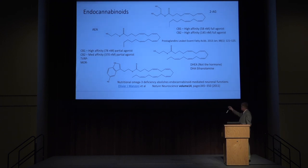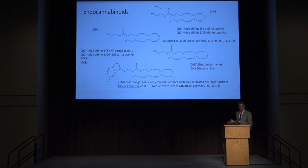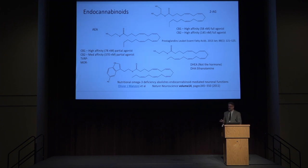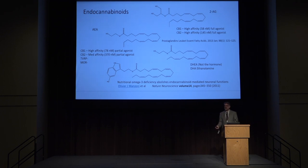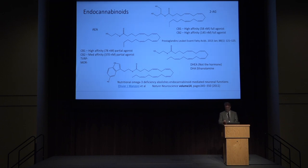We know that the DHA ethanolamide endocannabinoid was discovered by people looking for things that stimulate synaptogenesis — that paints a compelling picture to quit consuming omega-6s. The last molecule up here is a serotonin derivative of arachidonic acid that has endocannabinoid function. There's also a dopamine endocannabinoid. The point is: your diet influences your endocannabinoid system dramatically, and we're just scratching the surface on these molecules. We need a lot more research that doesn't just focus on the first two that were discovered.